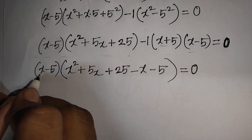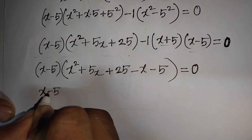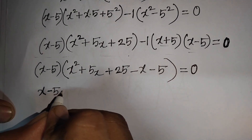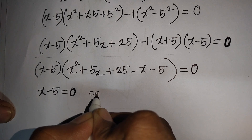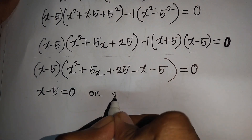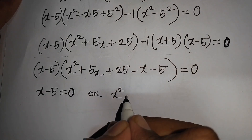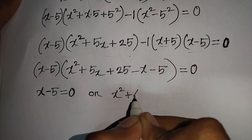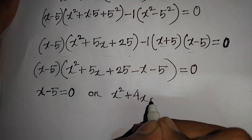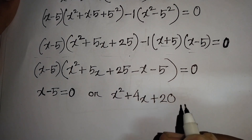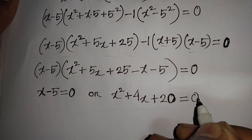Now we can write: (x - 5) = 0, or x² + 5x - x — that means plus 4x — then plus 25 - 5, which means plus 20, equal to 0. So we have x² + 4x + 20 = 0.